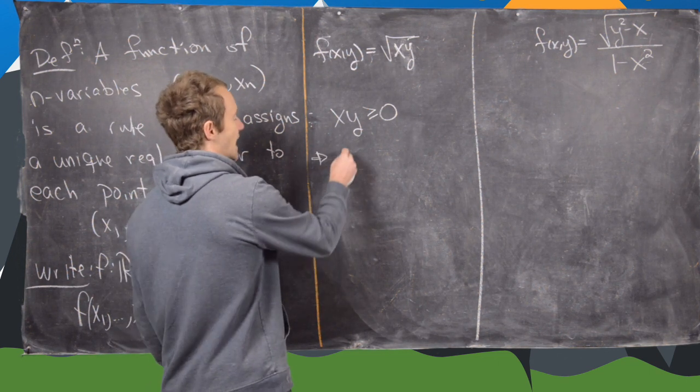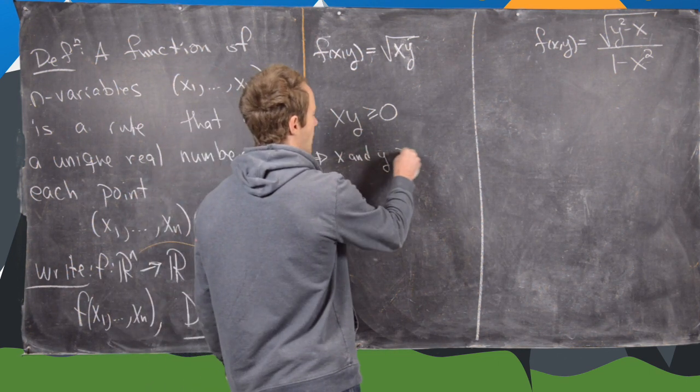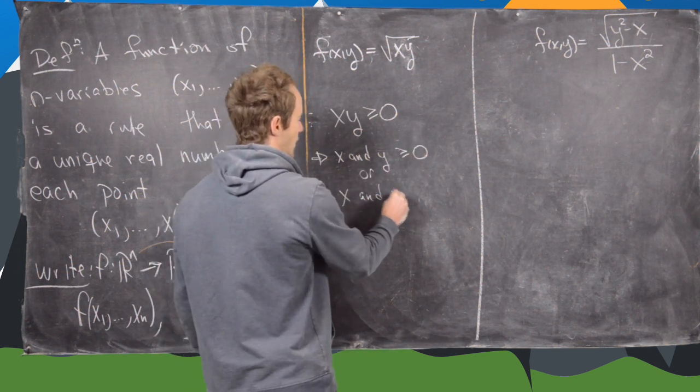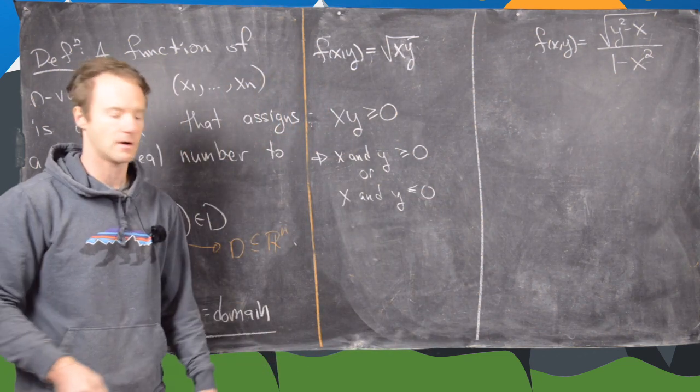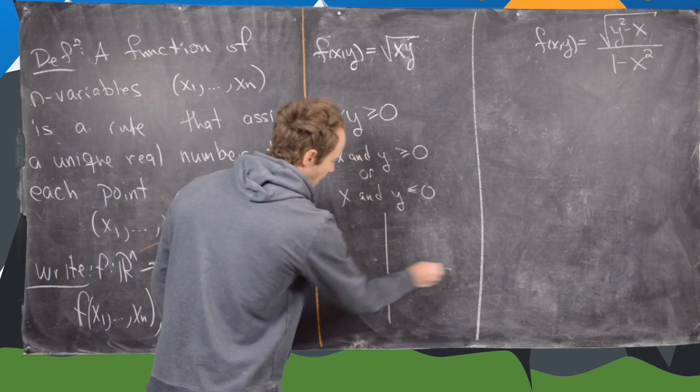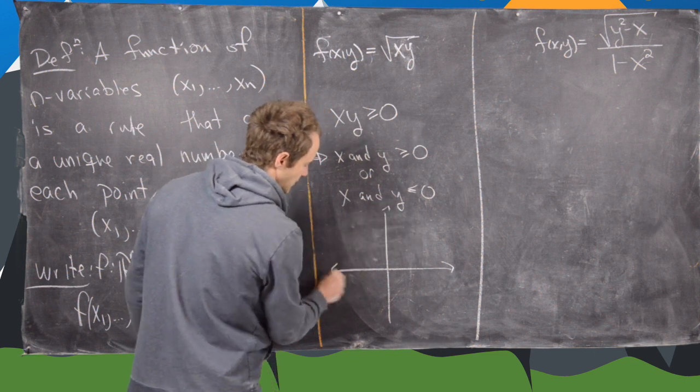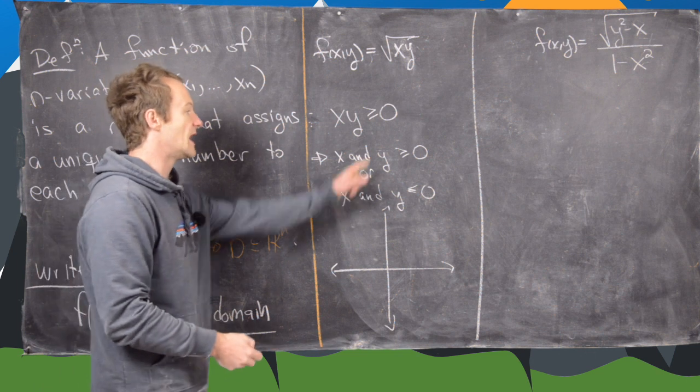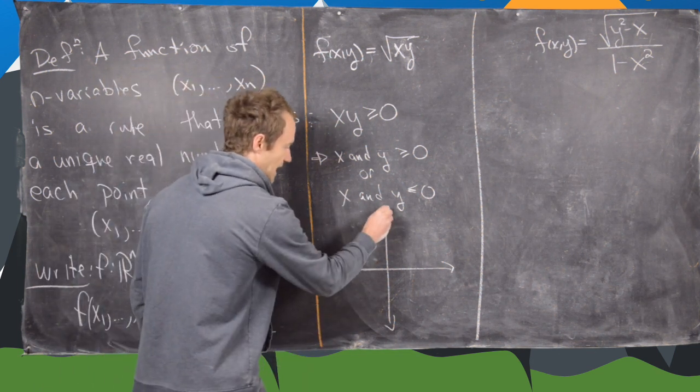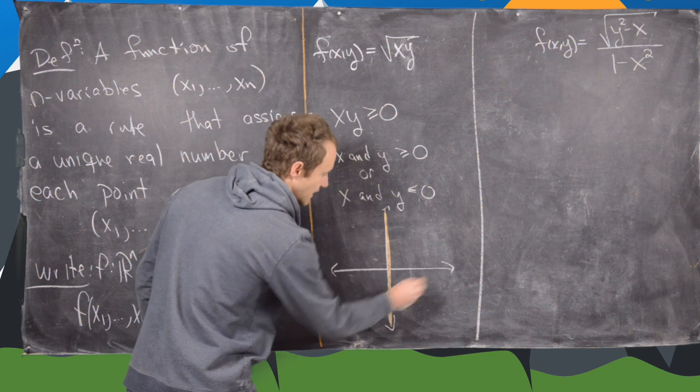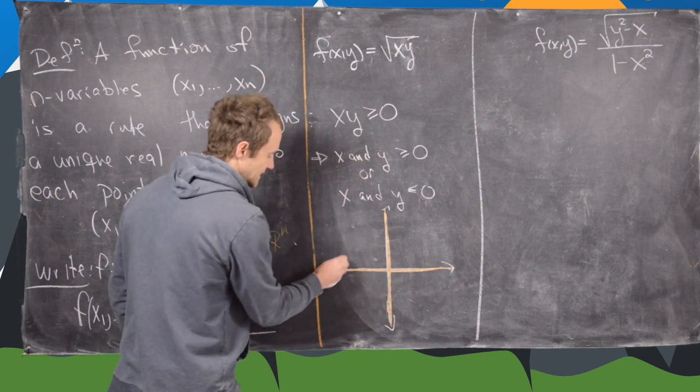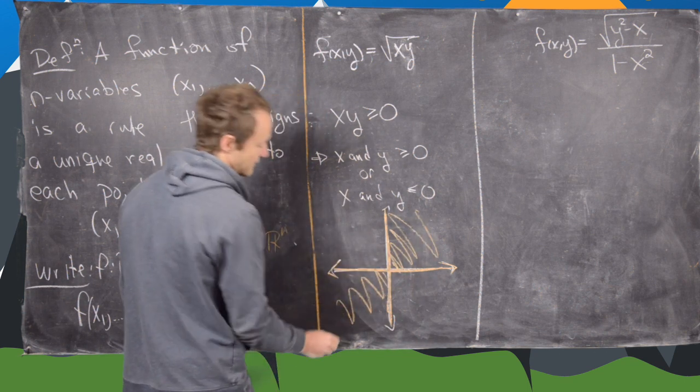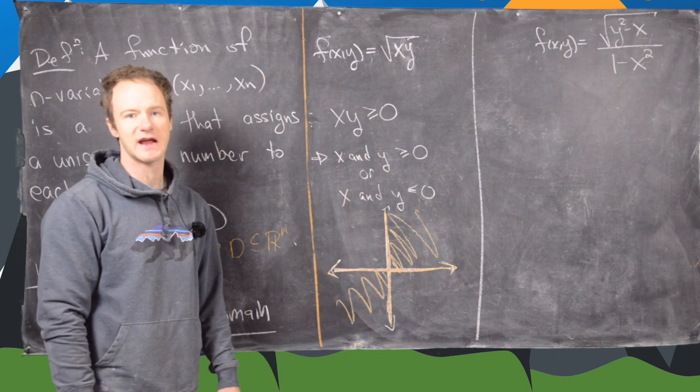So this gives us either x and y are bigger than or equal to zero, or x and y are less than or equal to zero. Now we can plot that in the plane. Notice that's exactly describing the first quadrant and the third quadrant. And also the coordinate axes are allowed here. So here I'll put in yellow solid line the coordinate axes to show that we're including those. And then we can shade all of this and all of this. So this is the domain of this function.